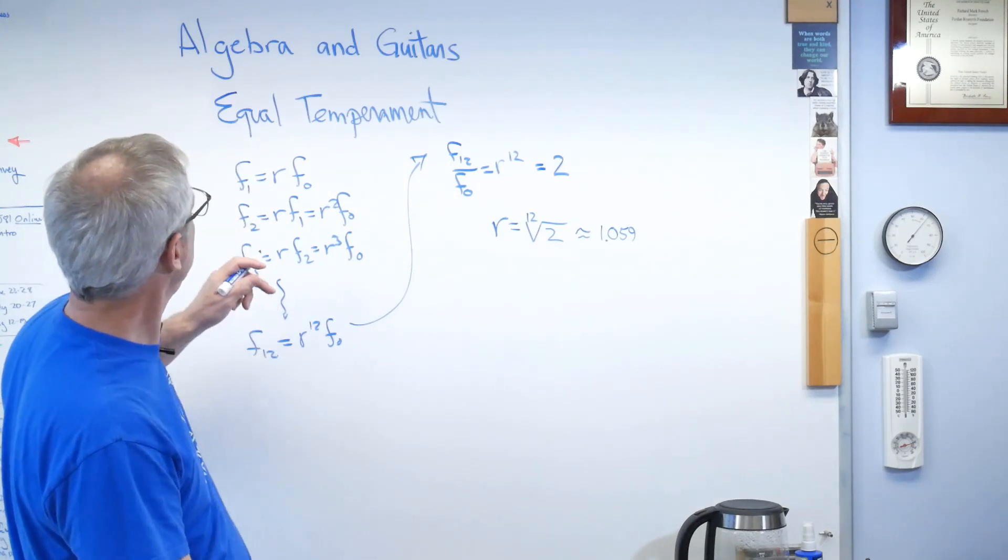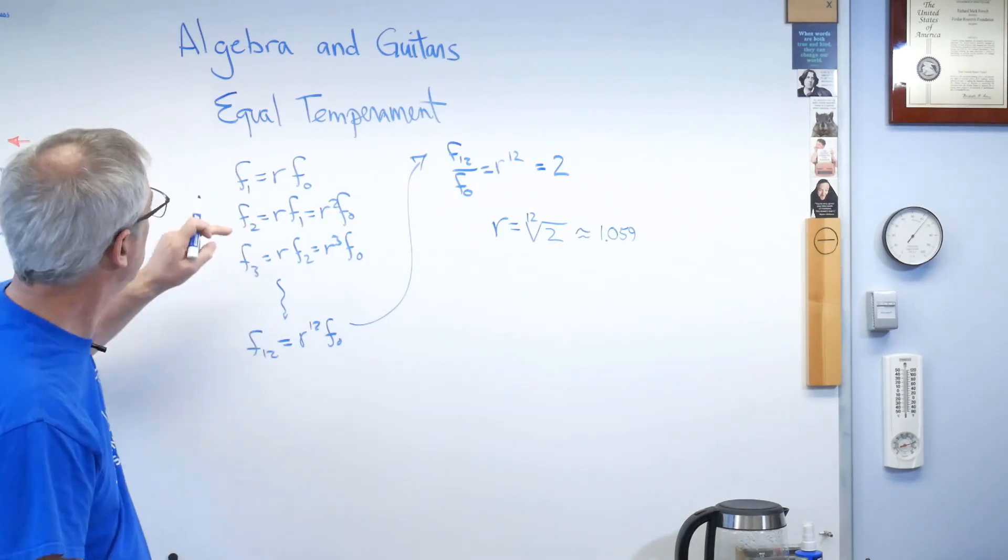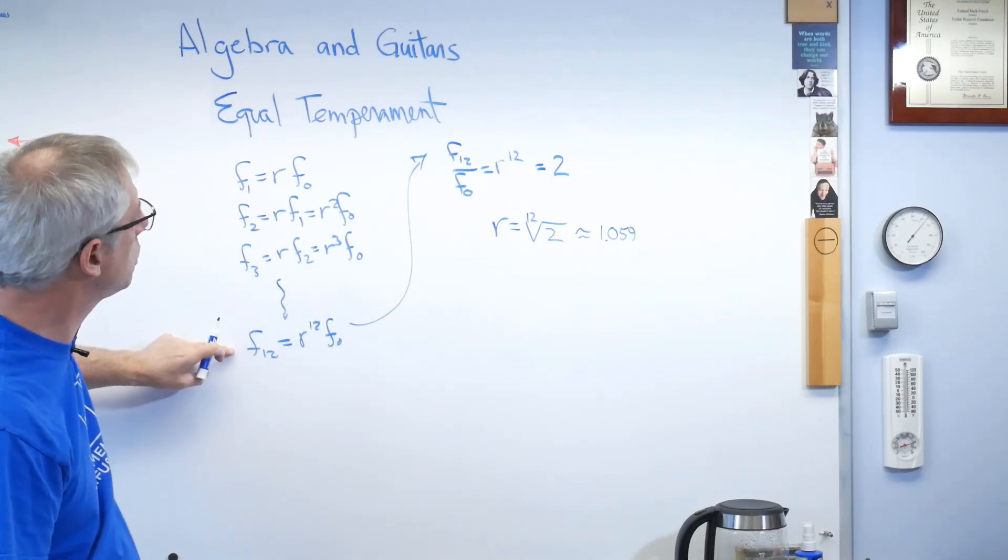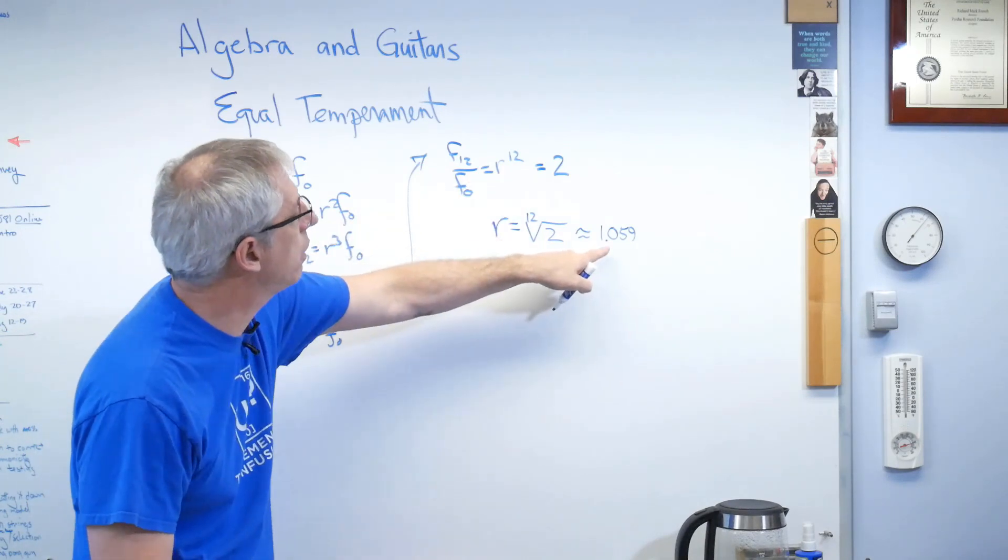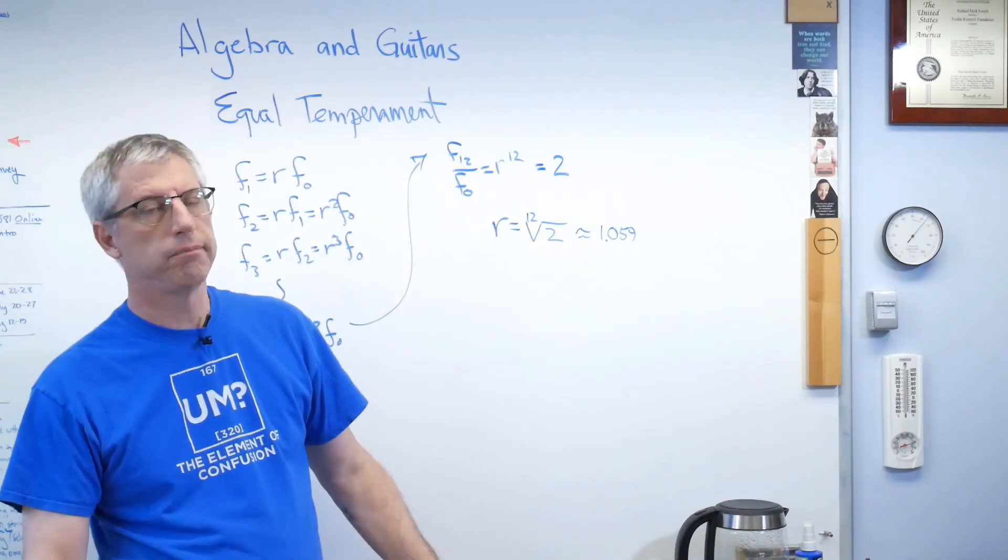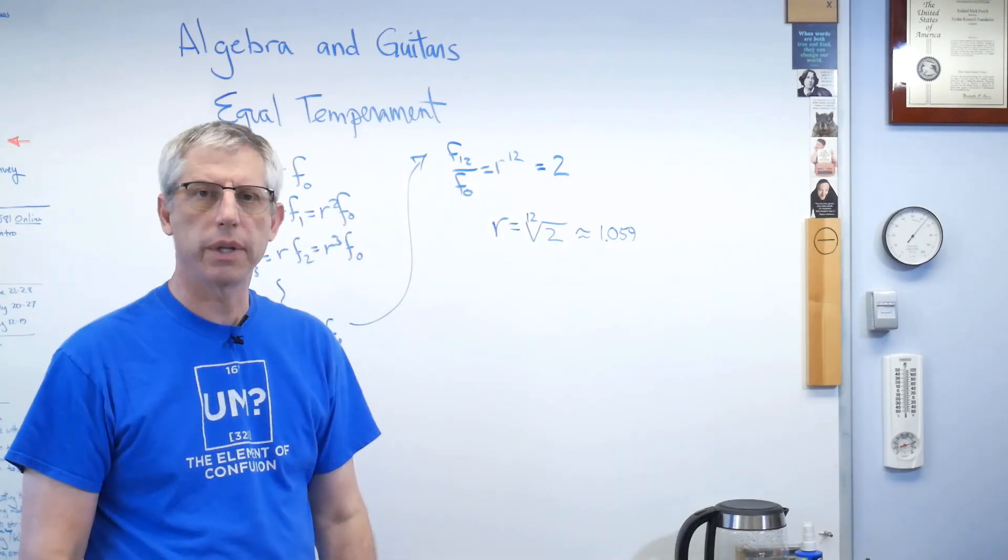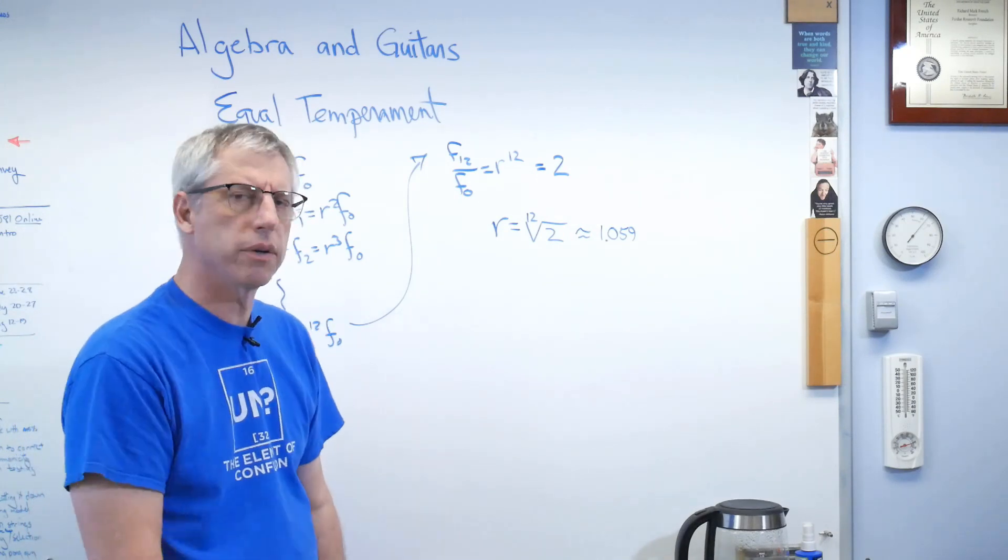Alright, so I used algebra to describe the note, the ratios of successive notes, and using the idea of the octave, I applied it to that number to figure out that. Okay, well, where am I headed with this? How do you get from there to fret locations?